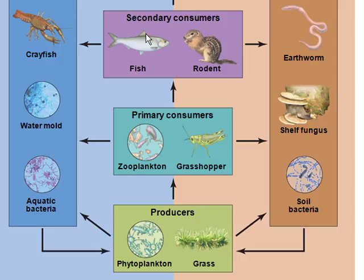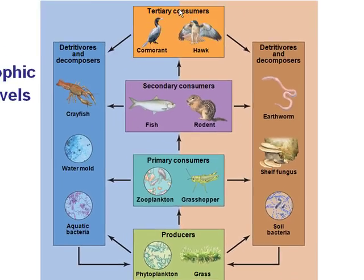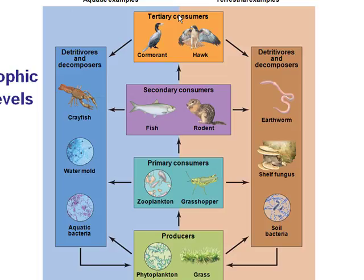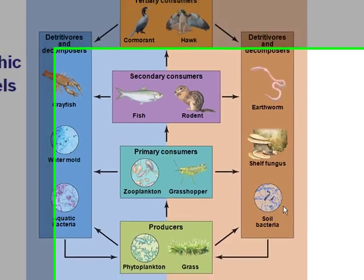Predators that feed at higher levels are known as tertiary consumers. For example, hawks eat rodents that eat grasshoppers. Detritivores and decomposers play a very important role in ecosystems. They consume the non-living organic matter — the dead stuff.